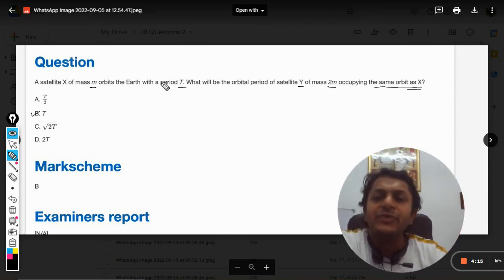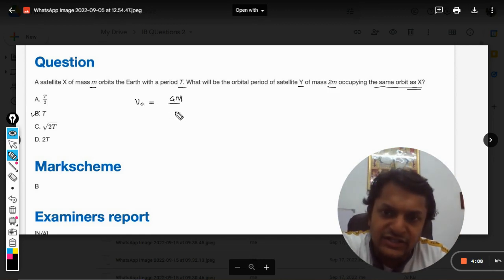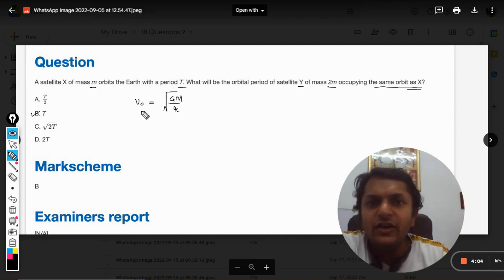First of all we know that the formula for the orbital velocity is given by GM by r square root. So this is the formula for the velocity of the satellite when it is orbiting around the planet.